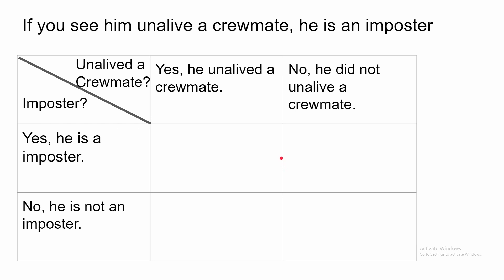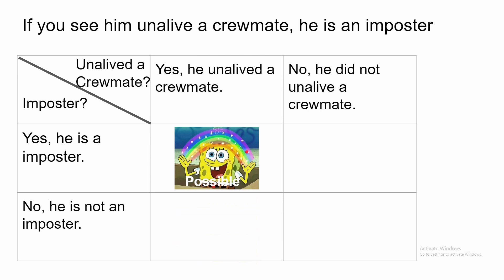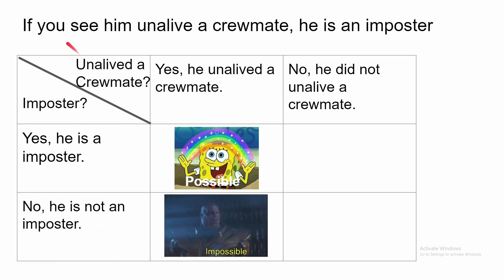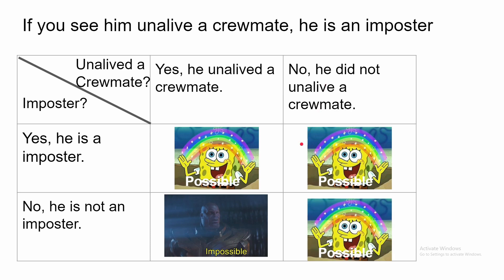Is it possible that you saw him on the live crewmate and he is the imposter? Obviously yes — that's obviously possible. Now, is it possible that you saw him on the live crewmate but he is not the imposter? That is not possible at all, because if you see him on the live crewmate, he is an imposter. Now, is it possible that you did not see him on the live crewmate but he is still the imposter? Yeah, obviously. And is it possible that he did not do either? Also possible.